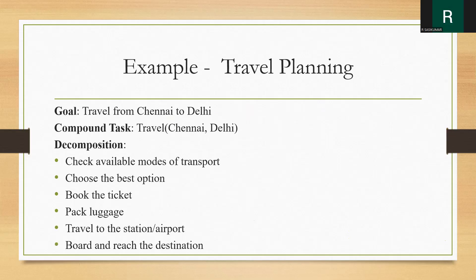For example, travel planning. My goal is to travel from Chennai to Delhi. Chennai is the source station and Delhi is the destination. The decomposition involves: check available modes of transport — either by train or flight — choose the best option based on comfort, book the ticket, pack luggage, travel to the station or airport, board, and reach the destination. This is travel planning.